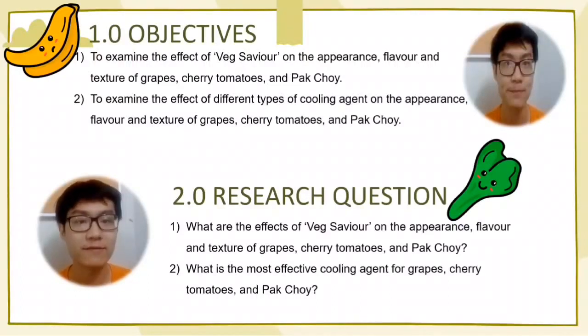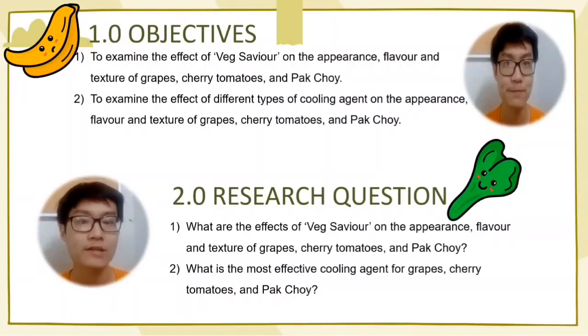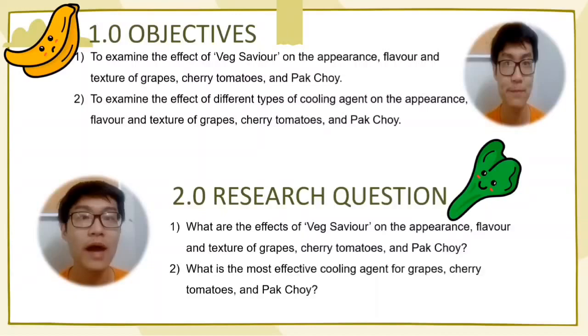What are the effects of wedge saviour on the colour, appearance, texture and flavour of grapes, tomatoes and bok choy? And what is the most effective cooling agent for grapes, tomatoes and bok choy?